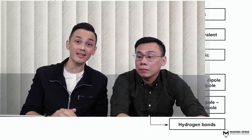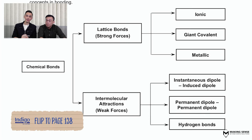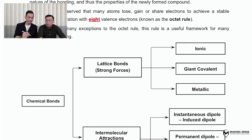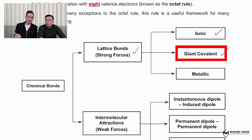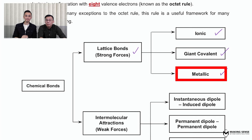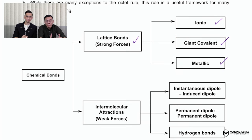Jokes aside — chemical bonding is actually one of the most important chapters students will learn in JC1. As you flip to your notes, you will see the overview of chemical bonding. Generally there are two types of bonding: the first are those that involve lattice bonds, which involve very strong forces — things you are quite familiar with, such as ionic bonding, giant covalent bonding, and metallic bonding.